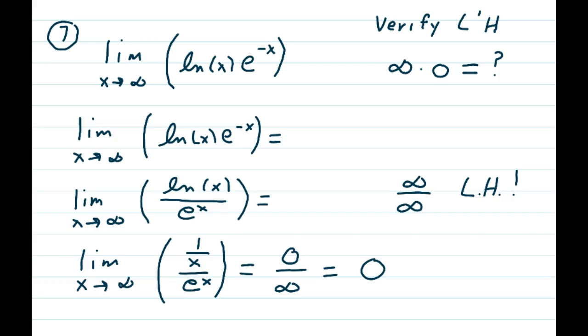So we take the derivative of the top and bottom. We get the limit as x approaches infinity of 1 over x over e to the x, which is 0 over infinity, which is 0.